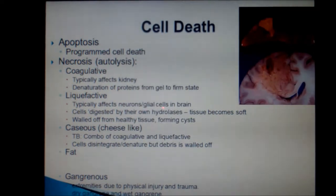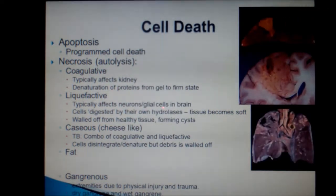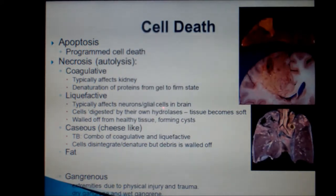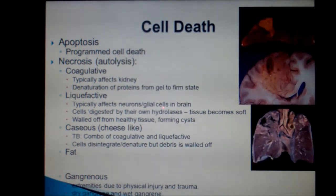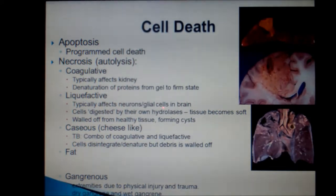Caseous necrosis is frequently described as cheese-like because that's what it looks like when seen on a gross specimen, as shown here. Caseous necrosis is a combination of coagulative and liquefactive necrosis, and you should associate it with pulmonary tuberculosis. Much like the liquefactive necrosis found in the brain, caseous necrosis is the result of the cells disintegrating or denaturing and then being walled off by the immune system. In the lungs, this walled-off nodule is called a Ghon complex, but we'll talk more about that when we revisit TB in detail later in the course.